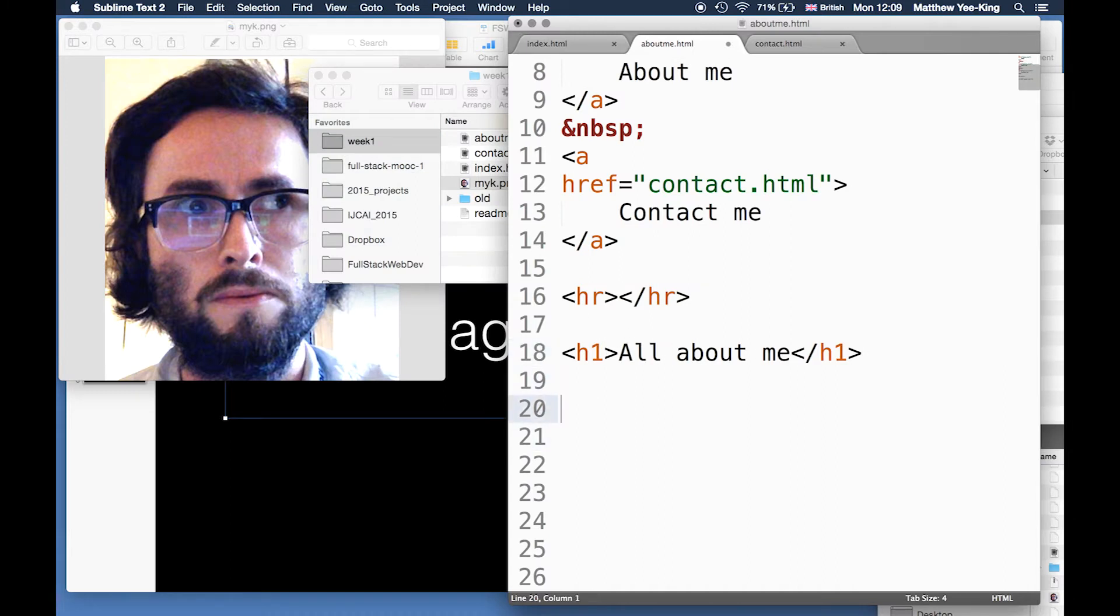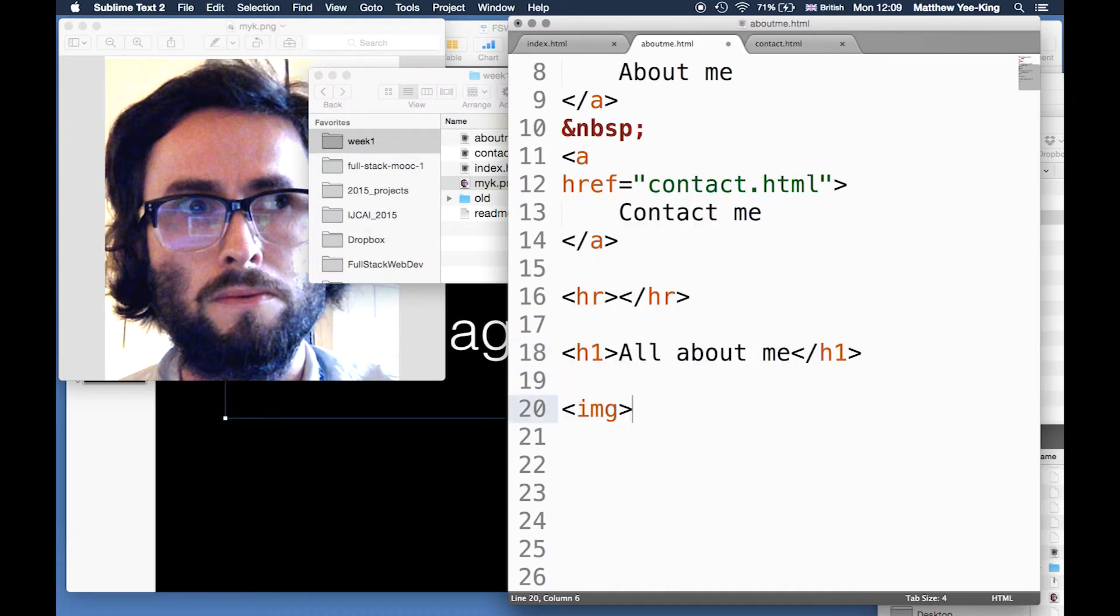Normally an image tag doesn't have any text inside it, so we can use a shorthand - we don't have to have a close tag, we just put that at the end. I've put an src attribute in here, which tells the browser where to load the image from. It's called myk.png.